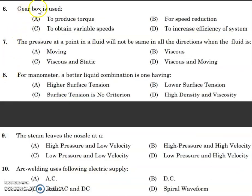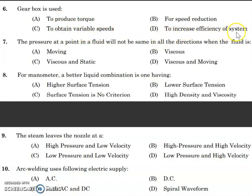The next question is: a gearbox is used to — produce torque for speed reduction, obtain variable speeds, or increase efficiency of the system. The answer is to obtain variable speed.